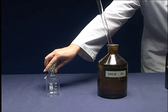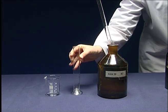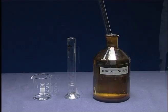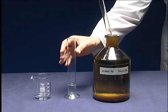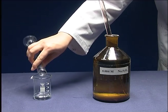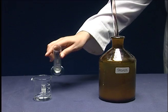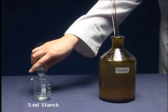Put 10 milliliters of potassium iodate in another 100 milliliters beaker and add 10 milliliters of sodium thiosulfate. Add 5 milliliters of starch solution.